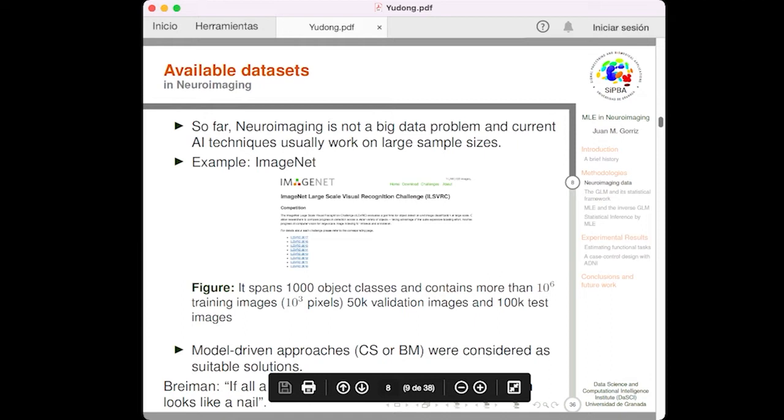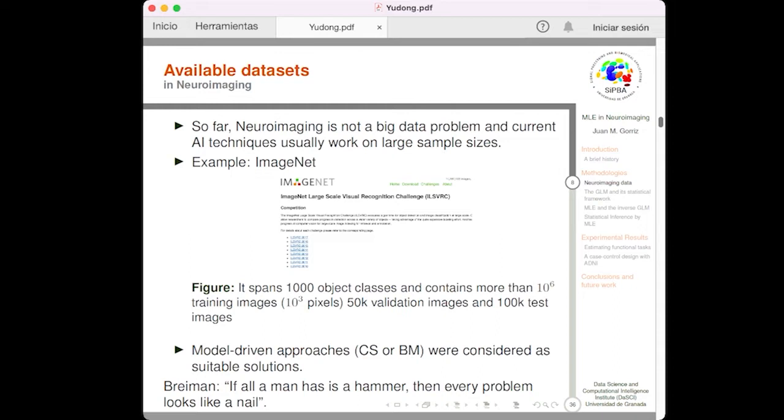However, currently, neuroimaging is not a big data problem. It is indeed a big problem. A contrast example is the ImageNet dataset, a typical big dataset in this field, that contains millions of training samples with thousands of predictors. That's why model-driven approaches in the field of neuroimaging were considered as suitable solutions, but of course, they are not the only one.